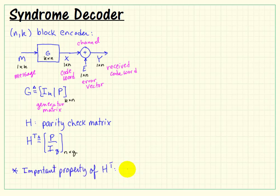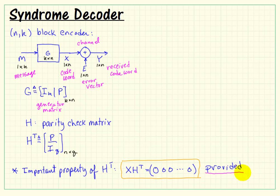Now a very important property of H transpose has to do with the product of the codeword and the transpose of H. It turns out that this is always a zero vector. The X being a valid codeword multiplied by our parity check matrix is zero. Again, the key point here is that X must be one of our valid codewords.